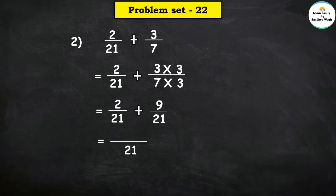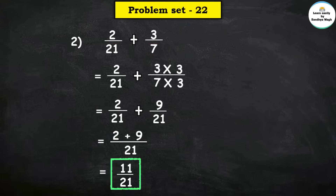Add the numerators: 2 plus 9 is equal to 11, and the denominator is 21. So here our final answer is 11 upon 21.